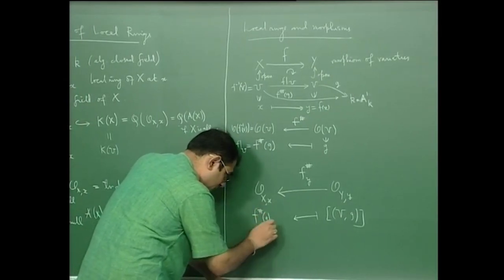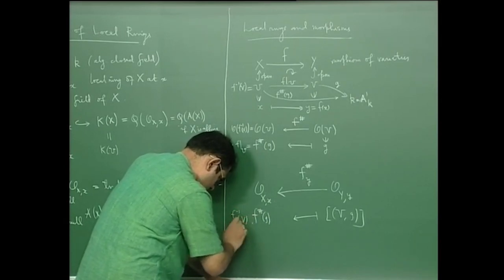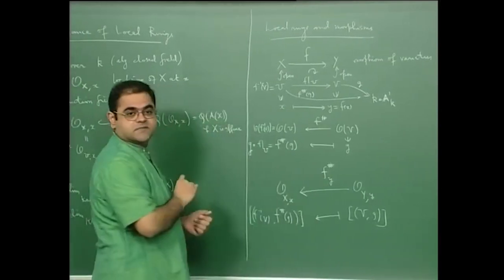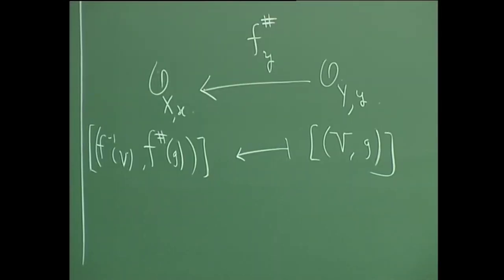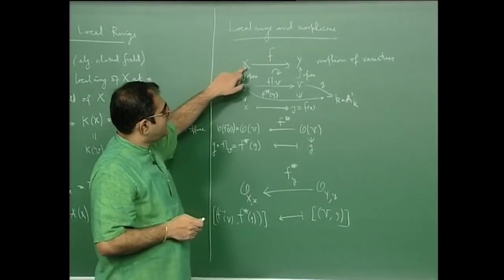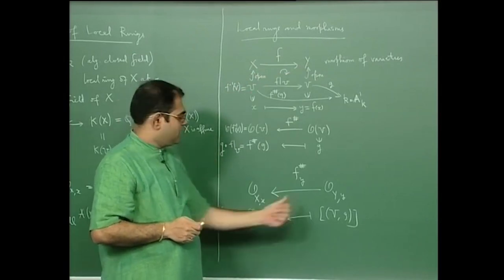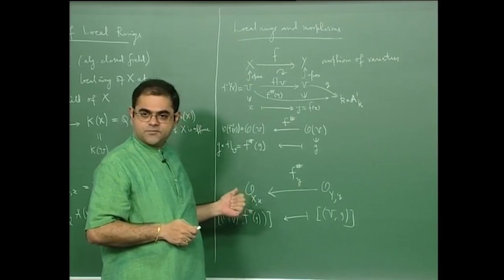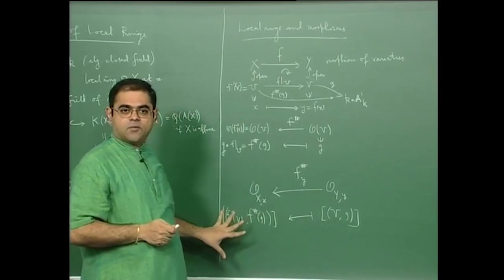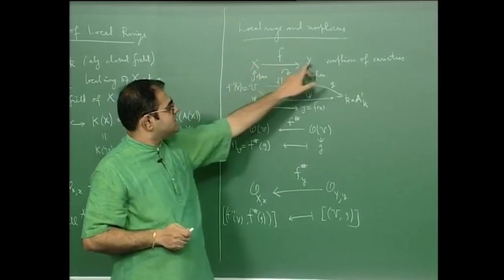An element of the local ring of Y at y is an equivalence class of a pair (V, g) where g is a regular function on V, a neighbourhood of y. This maps to the class corresponding to the pullback of that function, namely (f^{-1}(V), f^#(g)). So a morphism of varieties induces, for every point small x, a morphism of local rings going in the reverse direction — one morphism of varieties gives a whole bunch of morphisms of local rings.